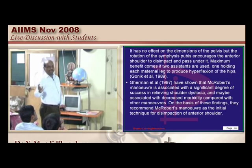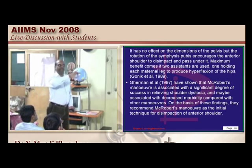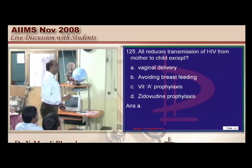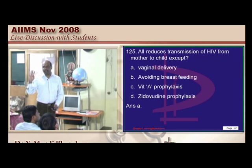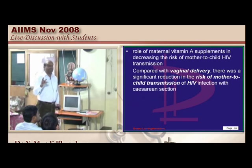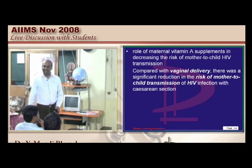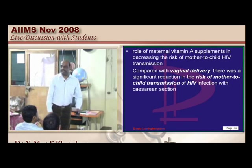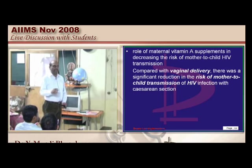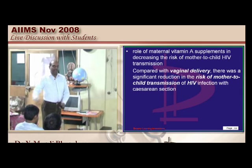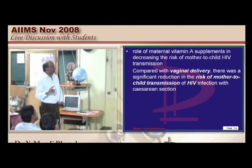Avoiding breastfeeding decreases HIV transmission from mother to child. Zidovudine prophylaxis definitely helps. Vitamin A prophylaxis is also discovered to prevent vertical transmission. Cesarean section instead of vaginal delivery will decrease vertical transmission — so vaginal delivery is the answer for what increases transmission.